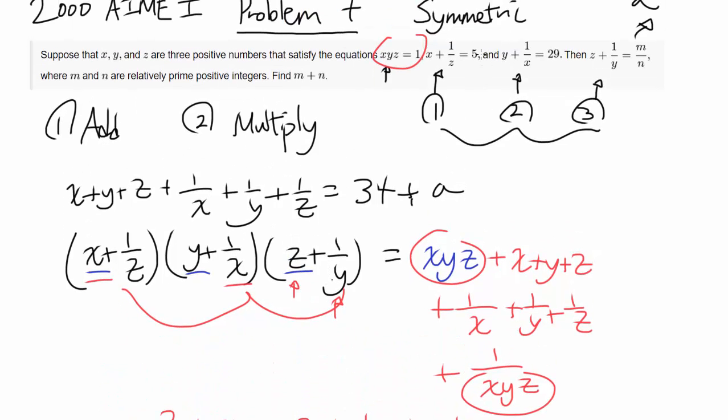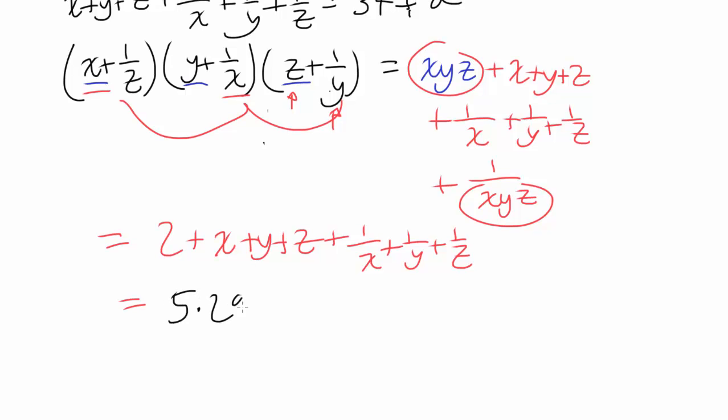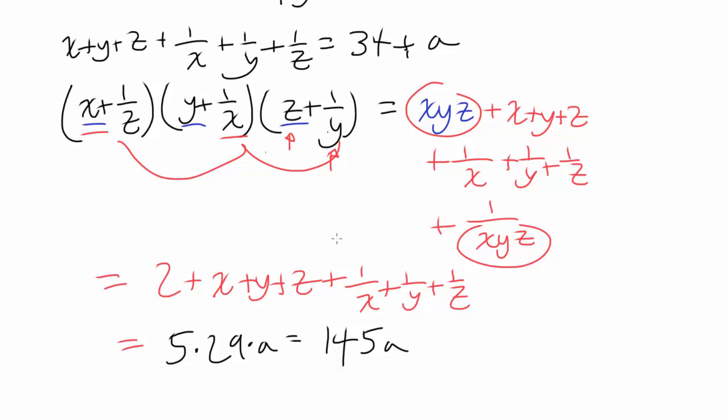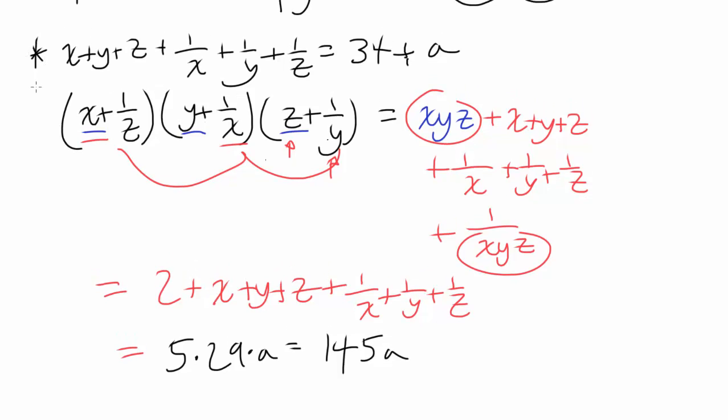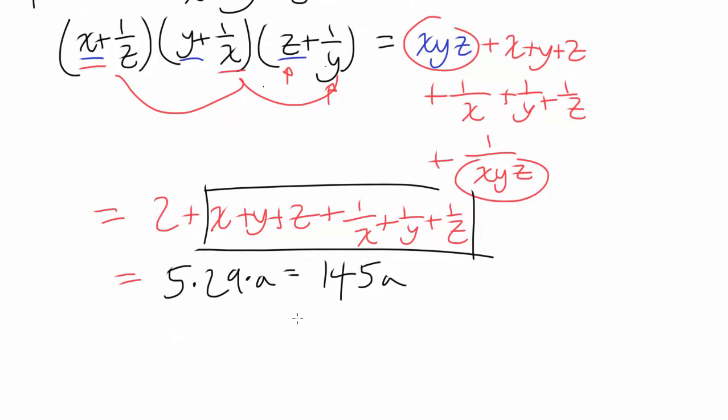We multiplied all of these equations together. So it should be equal to 5 times 29 times m over n, which is a. So we have 5 times 29 times a, which is 145a. Okay. So can we do anything with this? Hey, look at this. You know x plus y plus z plus 1 over x plus 1 over y plus 1 over z is 34 plus a. And here we have the same expression. So we can substitute the value in.